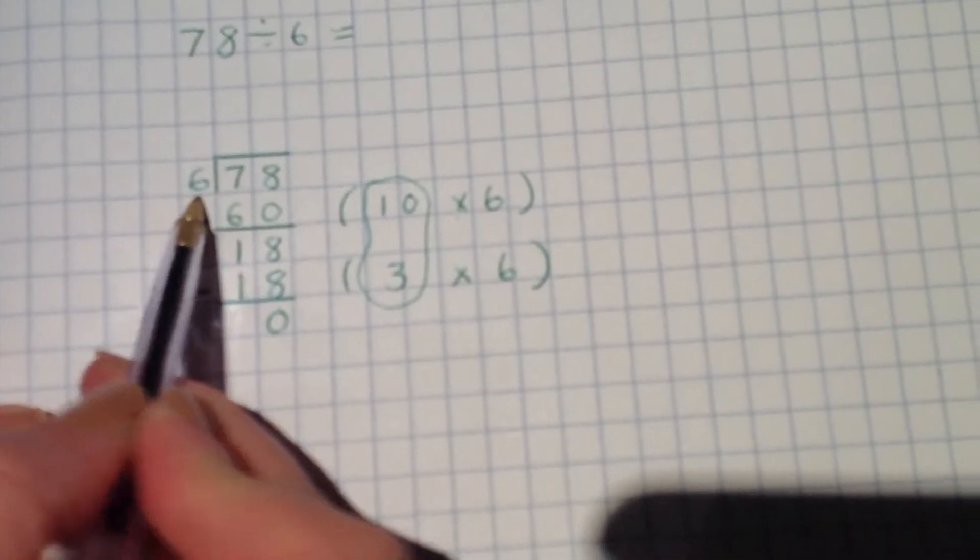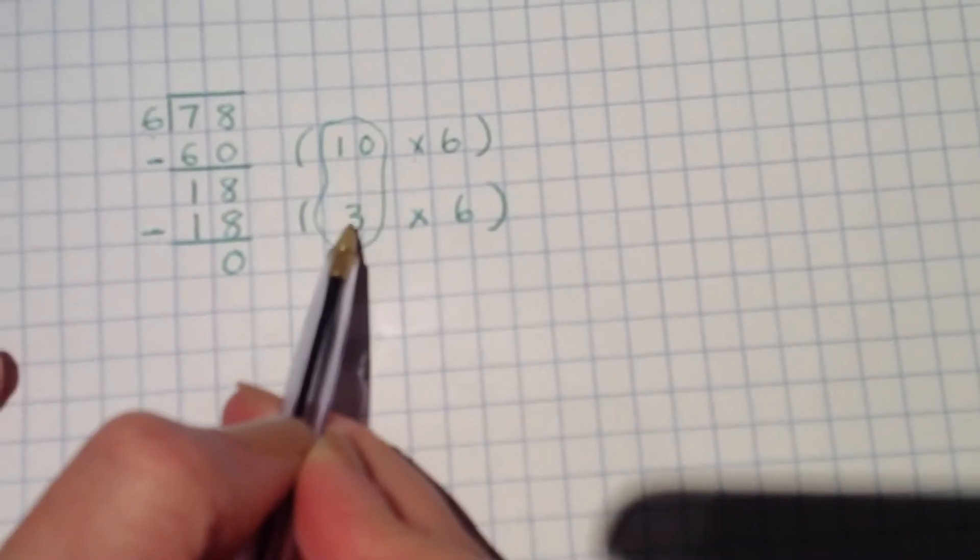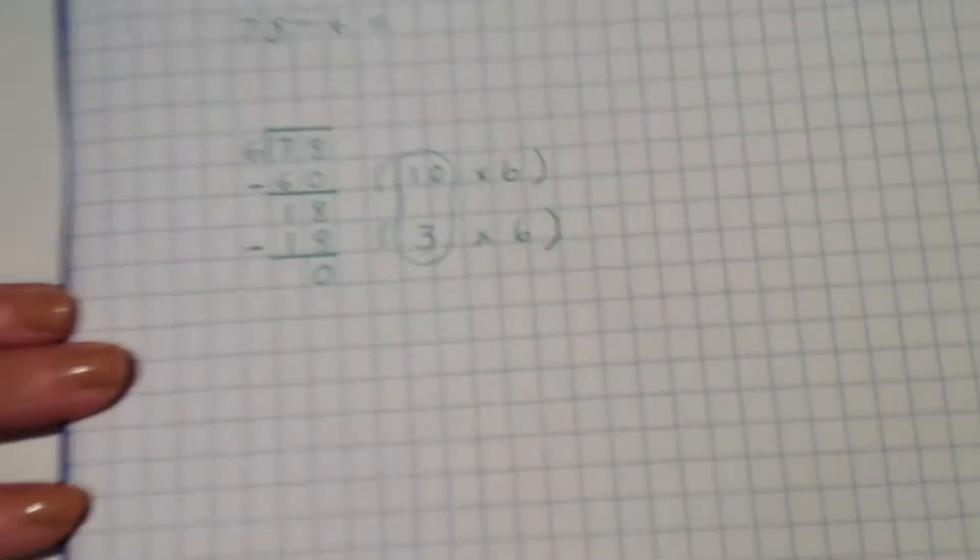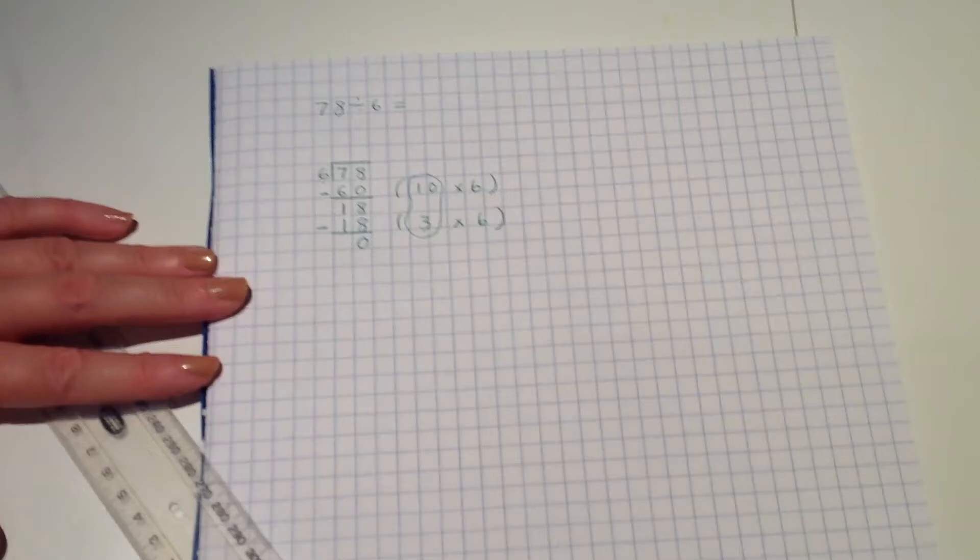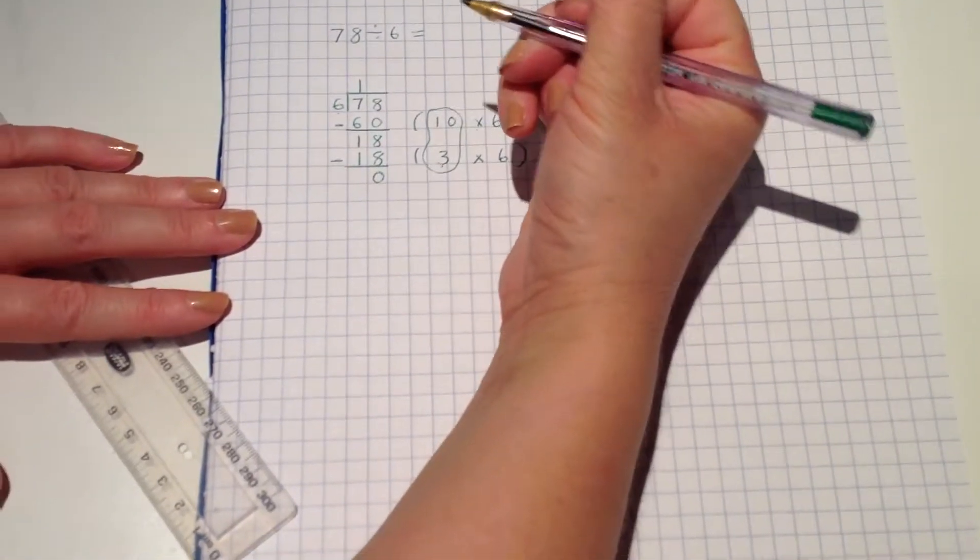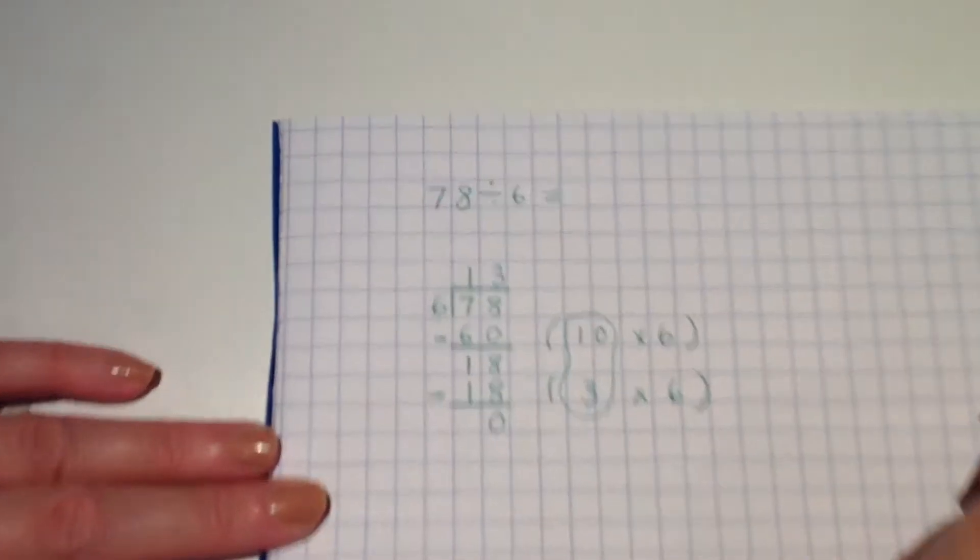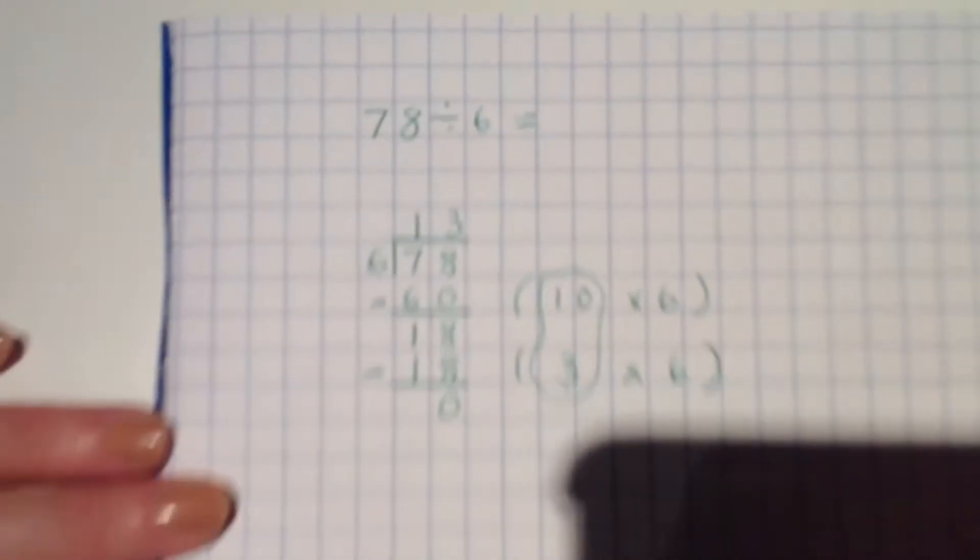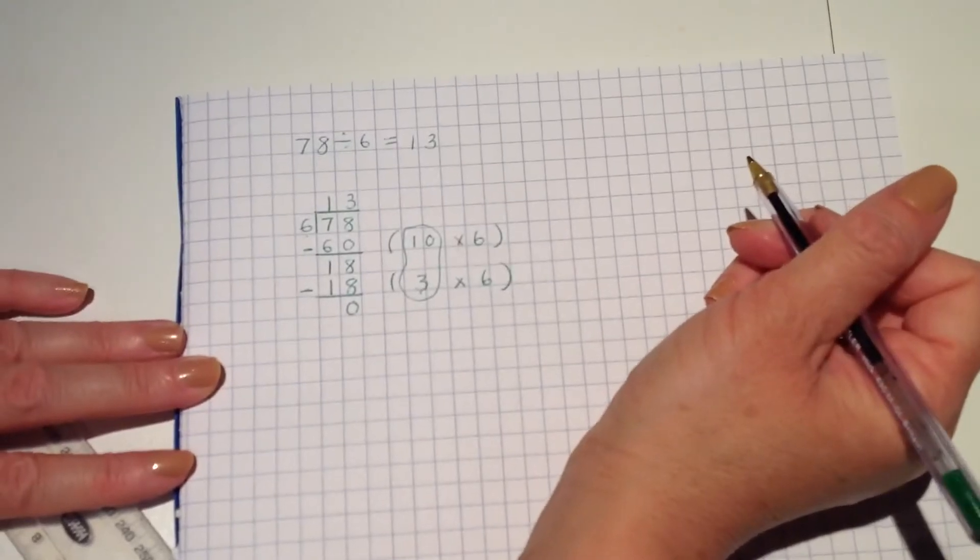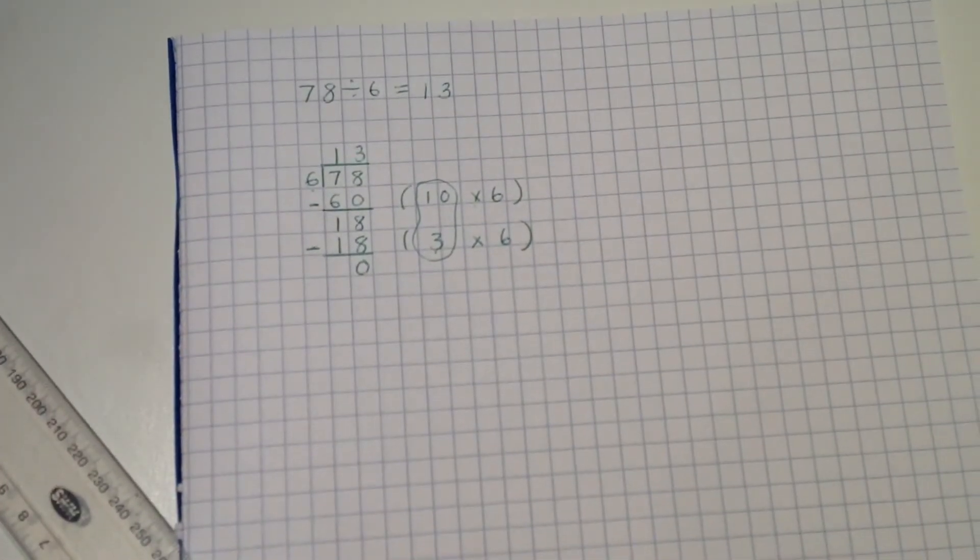Now, I need to look at the number of groups of six that I found inside that number. So here I found ten lots of six in the 60. Here I found three lots of six in the 18. So it's these two numbers I'm interested in. I'm not interested in the lots of six because that's what I was dividing by. But I'm interested in the ten and the three. So altogether, I found ten and three more, which was 13 lots of six.